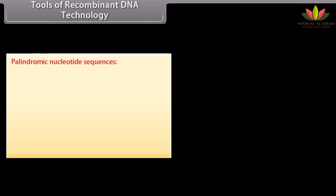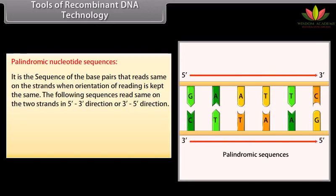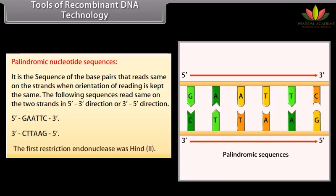Palindromic nucleotide sequences. It is the sequence of base pairs that reads the same on both strands when the orientation of reading is kept the same. The following sequences read the same on the two strands in the 5' to 3' direction or 3' to 5' direction: 5' — G-A-A-T-T-C — 3' and 3' — C-T-T-A-A-G — 5'. The first restriction endonuclease was HindII.